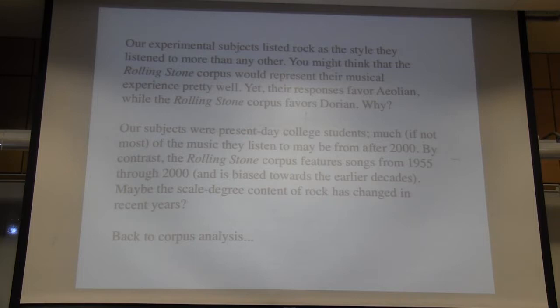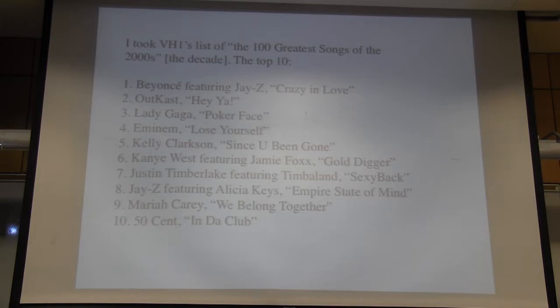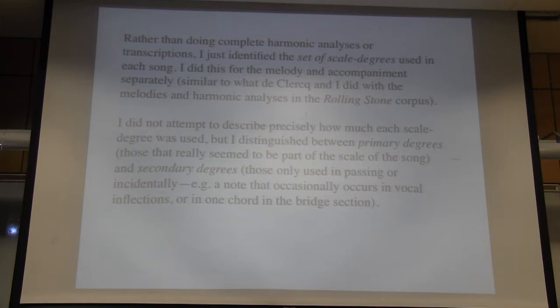I took VH1's list of the 100 greatest songs of the 2000s. VH1 is an American music cable channel. The top ten shows a wide range of pop music — some pop rock and some hip-hop. Rather than doing complete harmonic analyses or transcriptions, I just identified the set of scale degrees used in each song, done separately for melody and accompaniment, similar to what Trevor and I did for the Rolling Stone corpus. I didn't describe precisely how much each scale degree was used, but I distinguished between primary and secondary degrees — a primary degree really seems part of the scale, while a secondary degree is used only in passing.